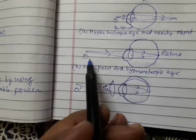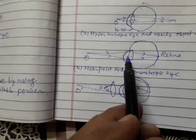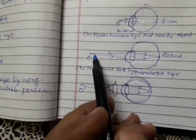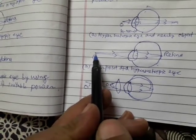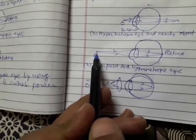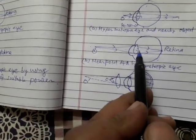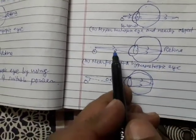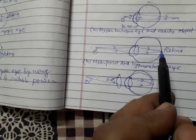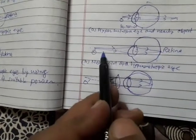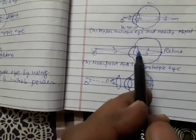Now, if the object is placed beyond the 25 cm up to this particular distance, then from that distance the person is able to see clearly because its image now will form at the retina. So, this is the near point for the hypermetropic eye.